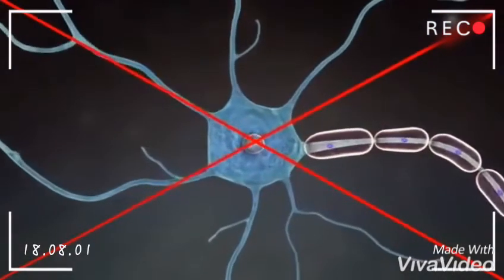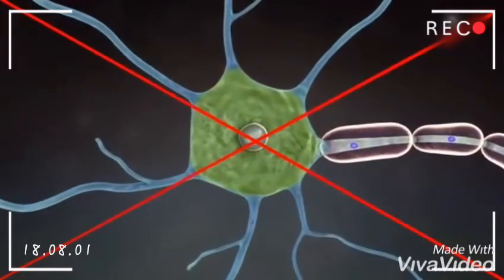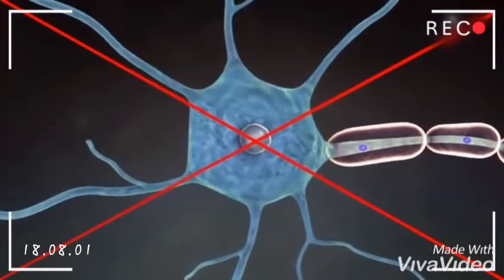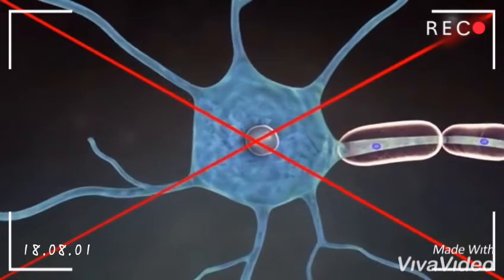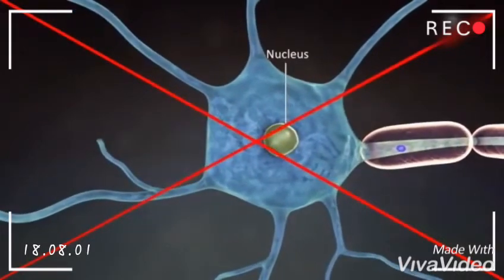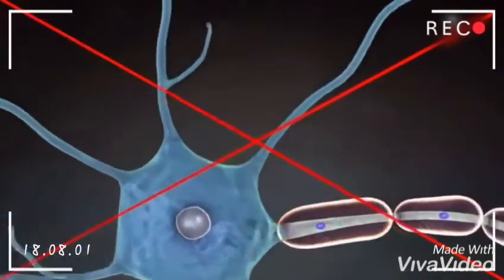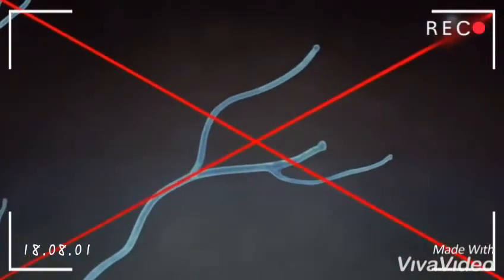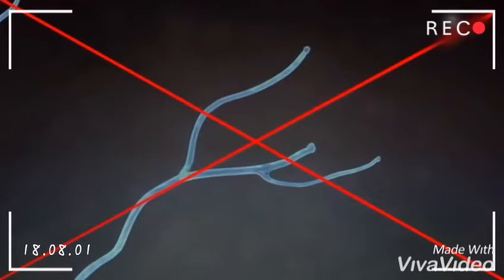A neuron consists of a cell body called soma. The soma is enclosed by the cell membrane and has a nucleus. There are several thin thread-like extensions from the cell body called dendrites.